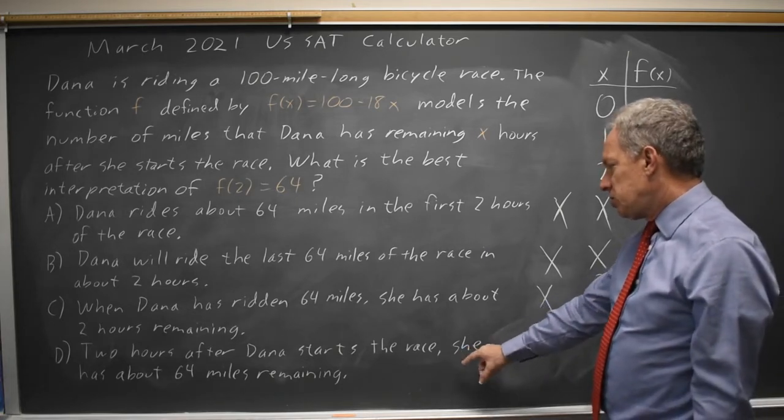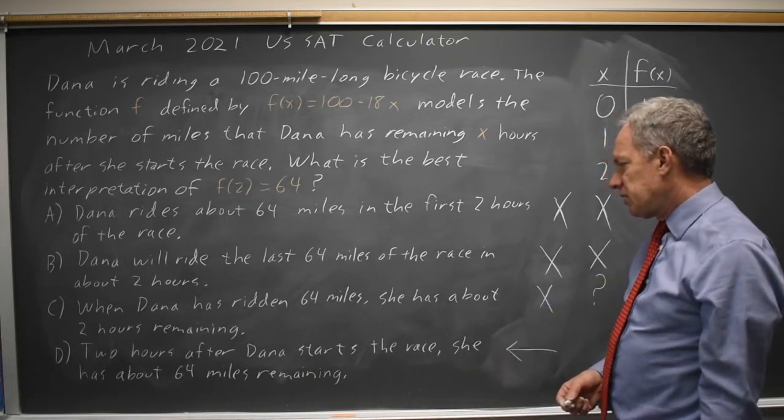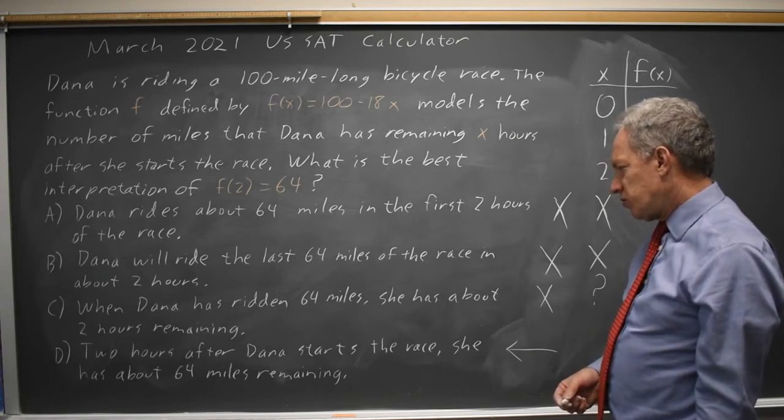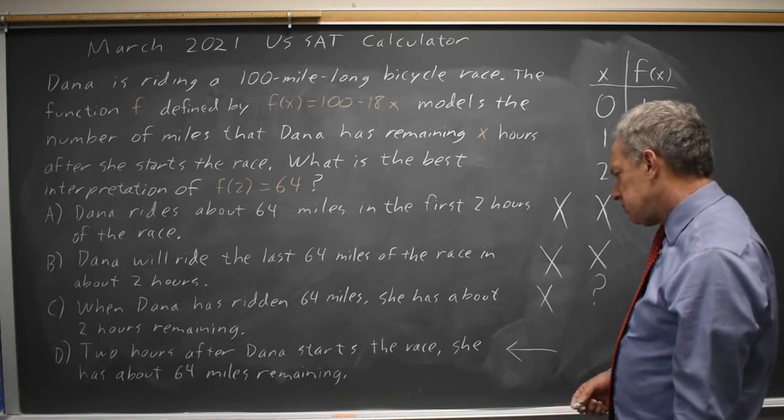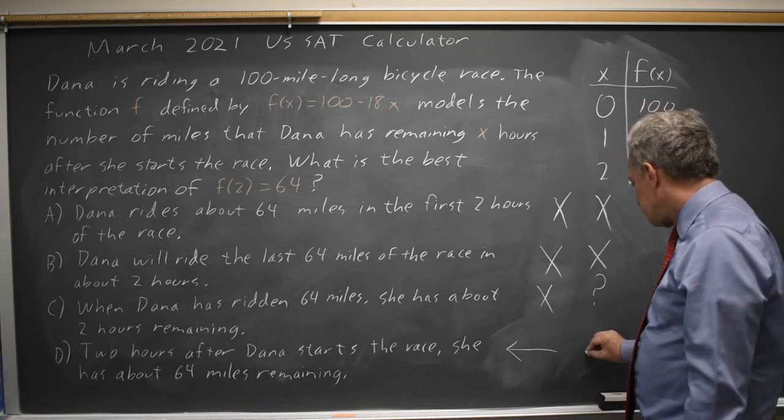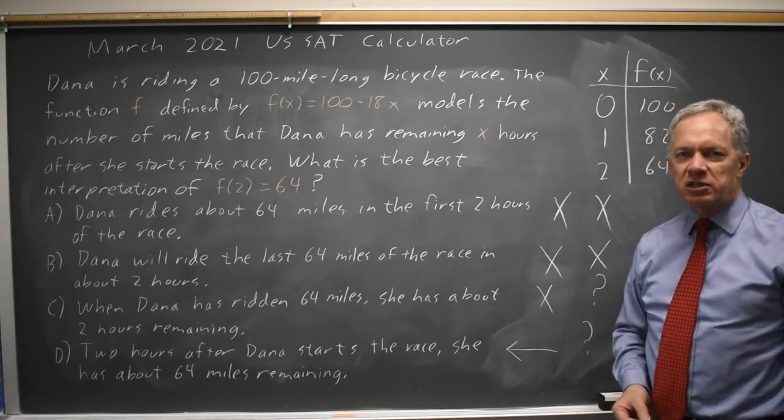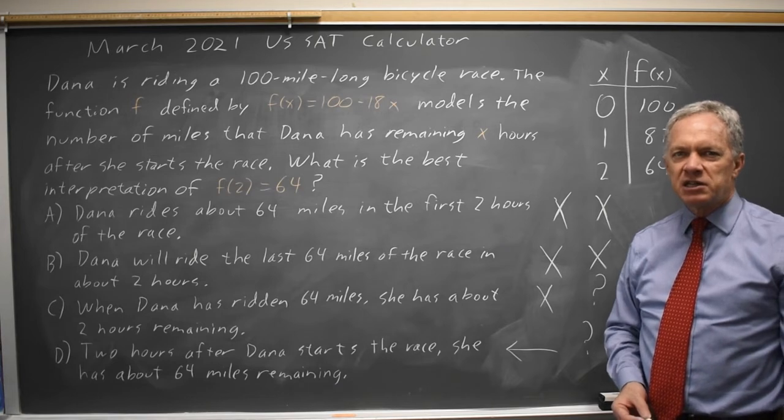And choice D, 2 hours after Dana starts the race, she has about 64 miles remaining. And that would be correct. Either one of those could be correct, so we're only able to eliminate 2 choices by making a table. But we did eliminate 2 choices.